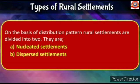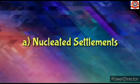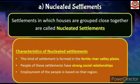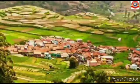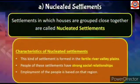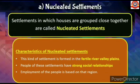Rural settlements are divided into two types based on distribution pattern: nucleated settlements and dispersed settlements. Settlements in which houses are grouped close together are called nucleated settlements. This kind of settlement is formed in fertile river valley plains, and people of these settlements have strong social relationships. Employment of the people is based on that region.